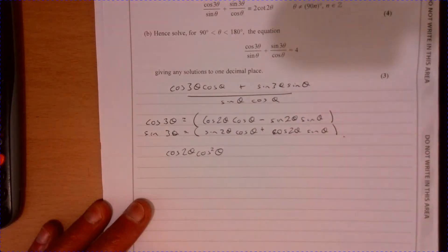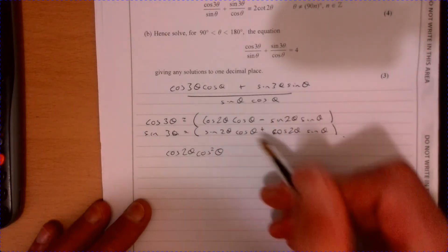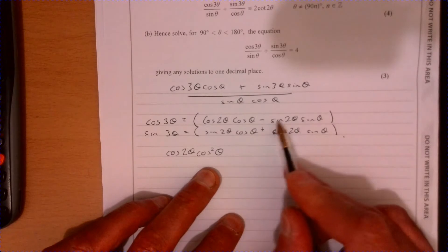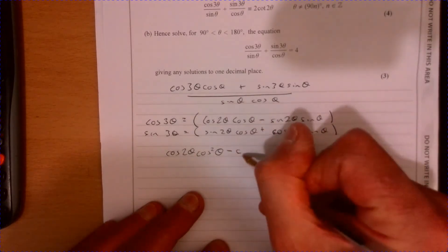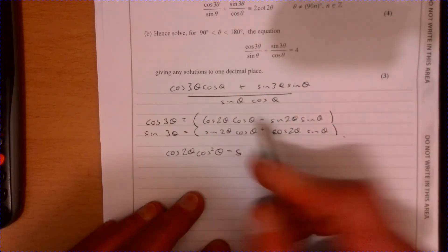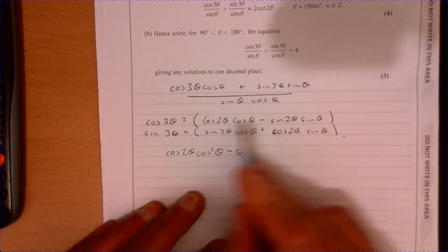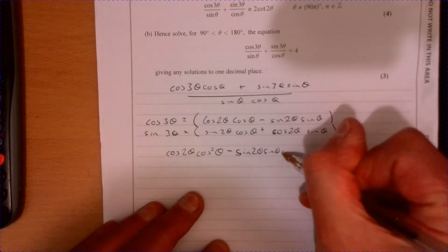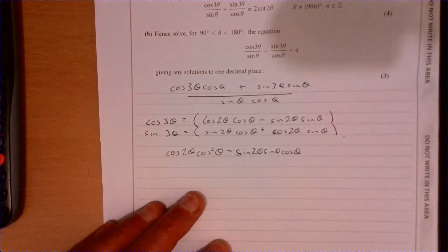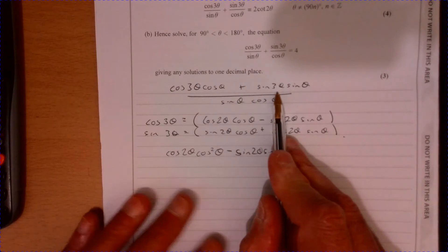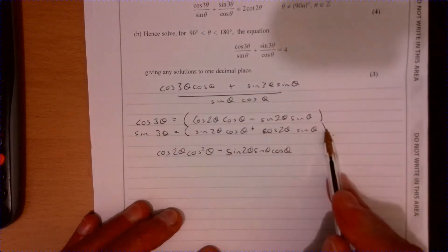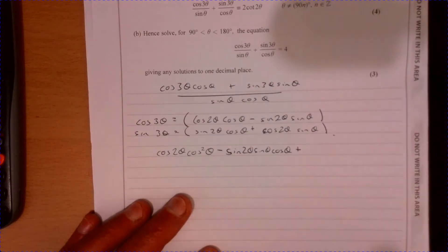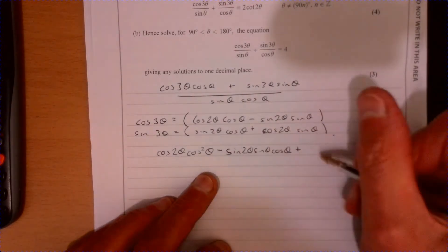Then the next one along, this one also gets multiplied by cos θ. Cos θ is being multiplied by both of these things here, so we've got minus sine 2θ sine θ cos θ.